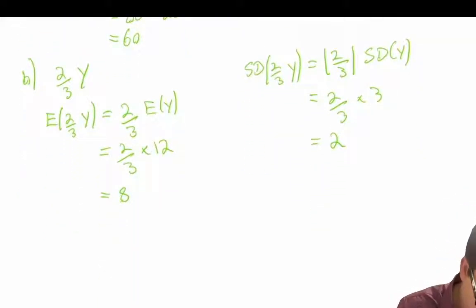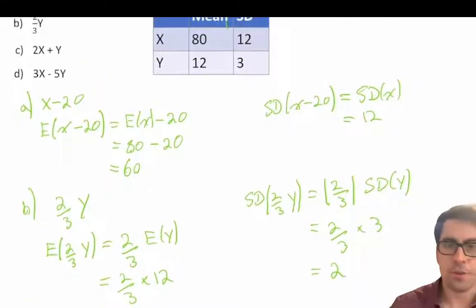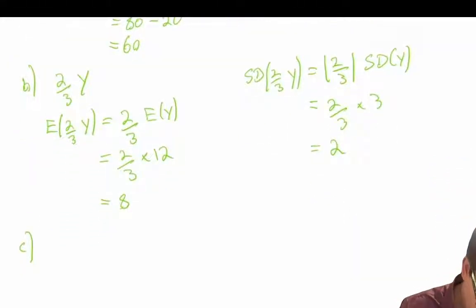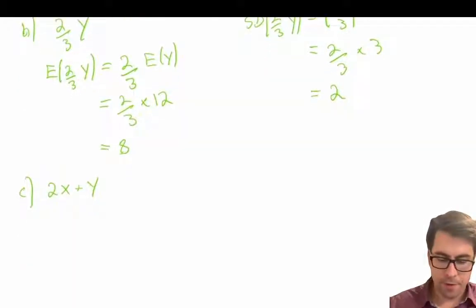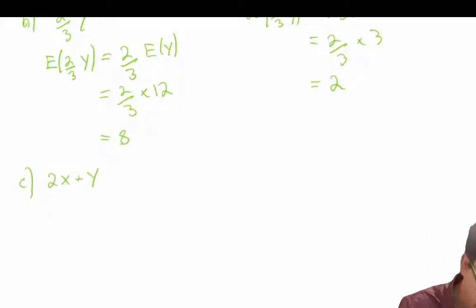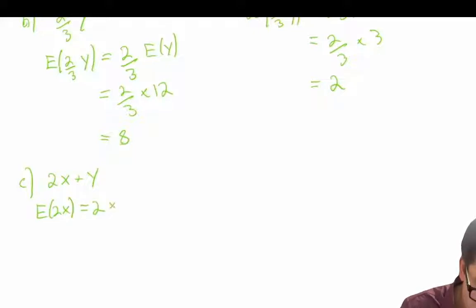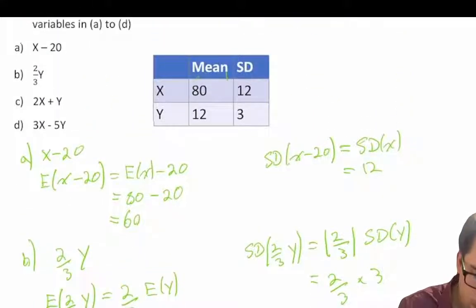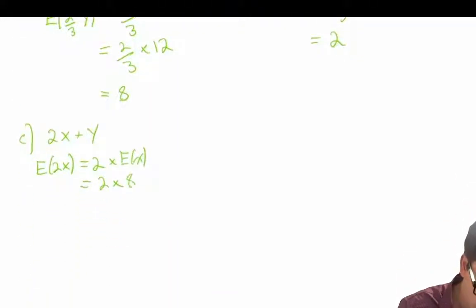Now in C, we're asked about 2X plus Y. We have to follow our order of operations, so let's first find the expected value of 2X. Our expected value of 2X, doing the multiplication first, is equal to 2 times the expected value of X, which is 80. So 2 times 80 gives us 160.